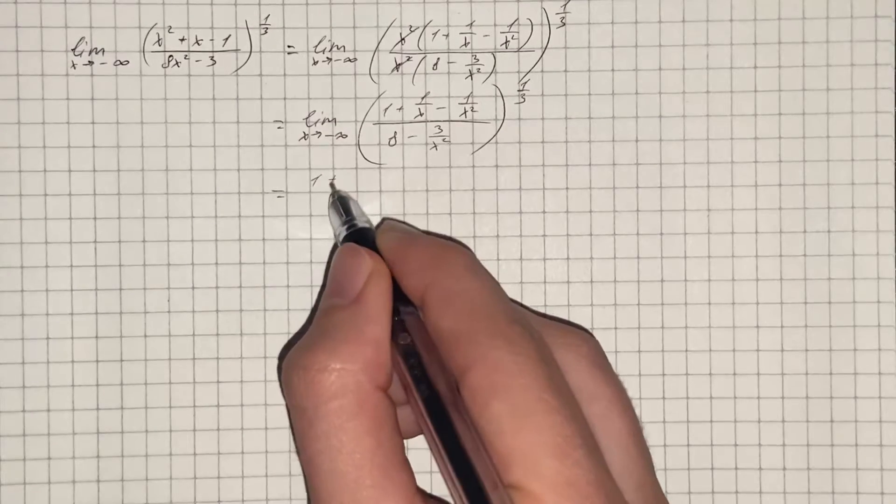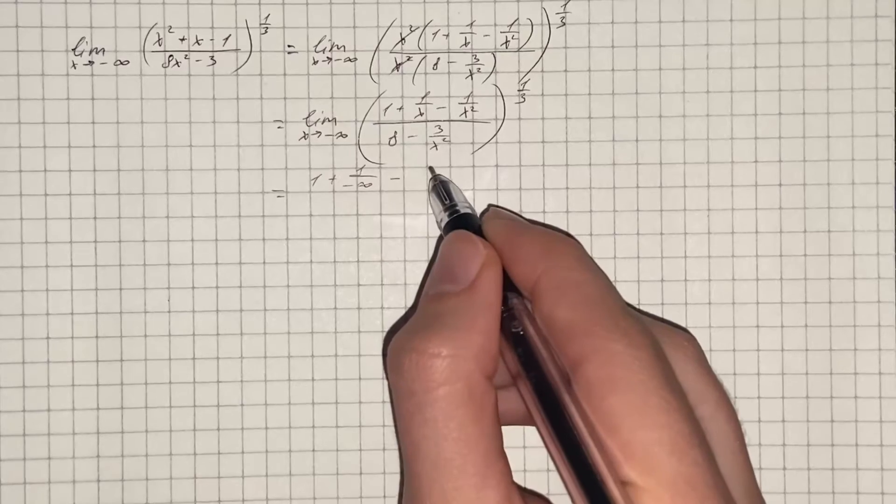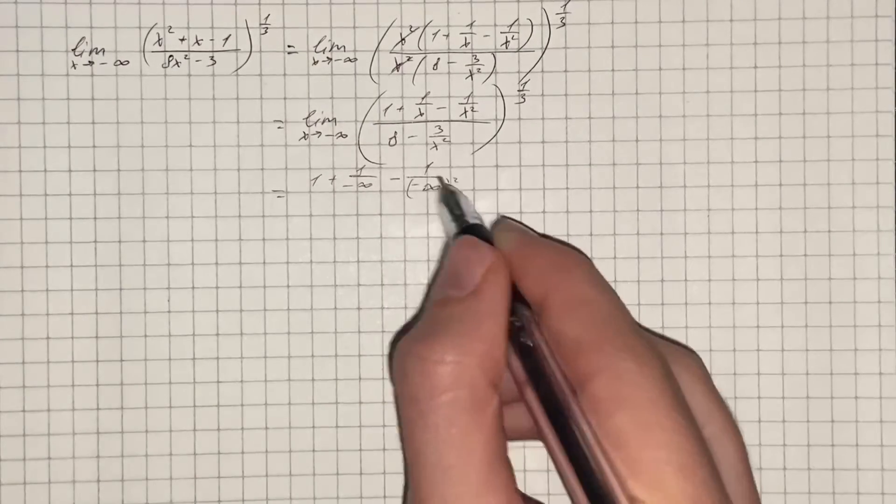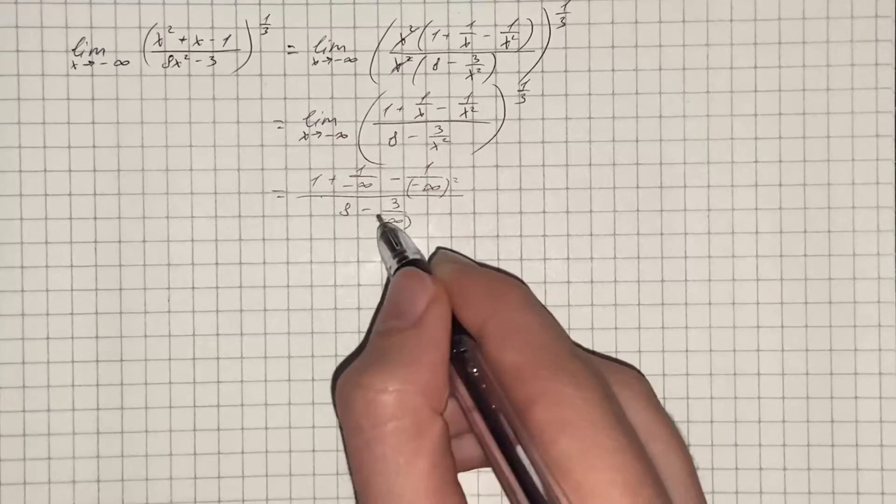Therefore we get 1 plus 1 divided by negative infinity minus 1 over negative infinity squared, all over 8 minus 3 over negative infinity squared.